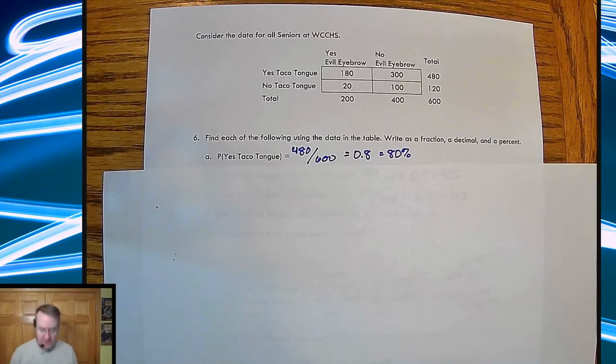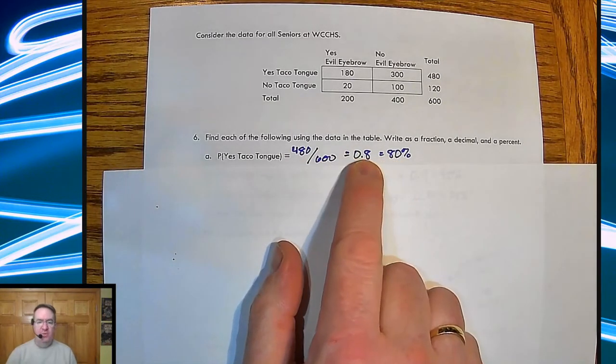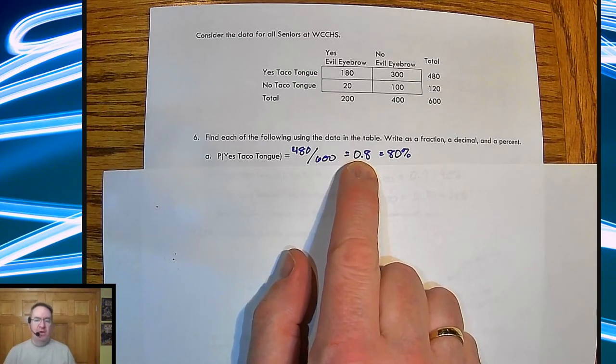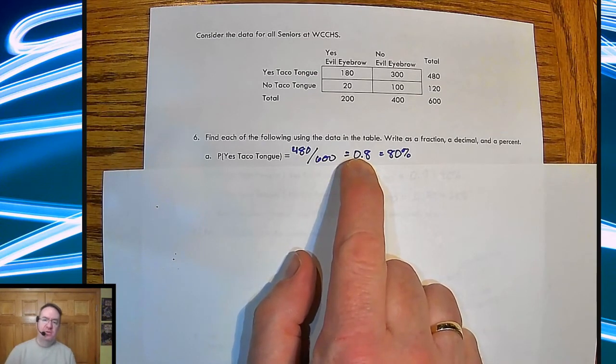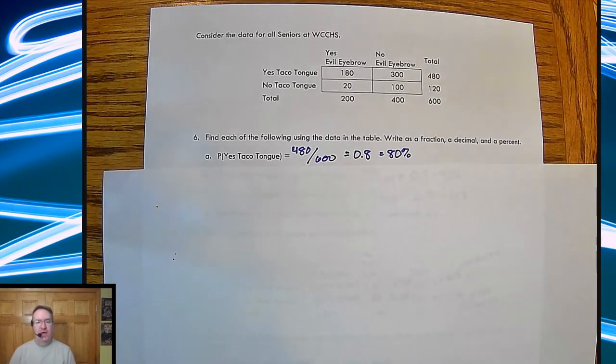Now, quick story. Actually had a senior one year not do well on a local test because they got one of the first questions wrong. And it was simply turning a fraction into a percentage. And one of the options on the answer was 0.8. So they just marked that down since that's what their calculator said. So don't go fast.